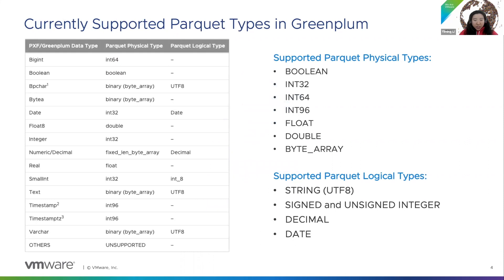In Parquet, there are two families of types: physical types and logical types. Logical types are an abstraction over the physical types. For instance, instead of defining a text as an array of bytes, we can simply annotate it with the appropriate logical type UTF-8. Before PXF release 6.5.0, PXF only supported Parquet primitive types. Here is the mapping among Greenplum primitive types, Parquet physical types, and Parquet logical types.